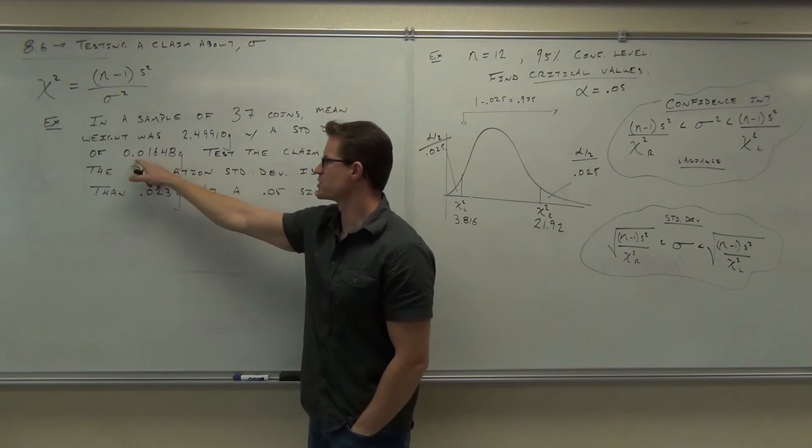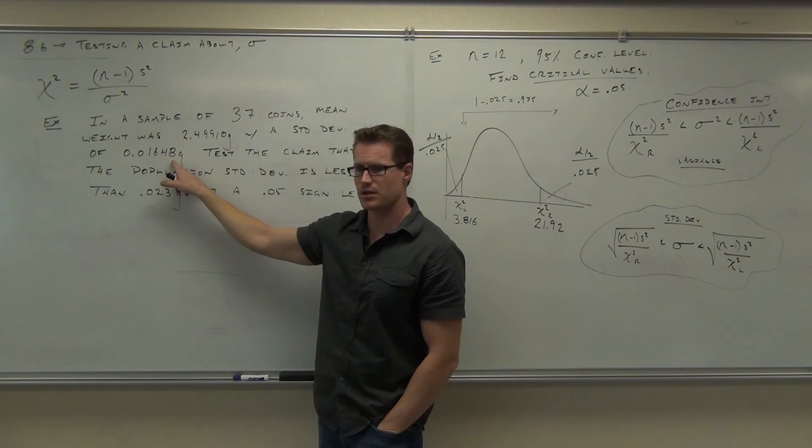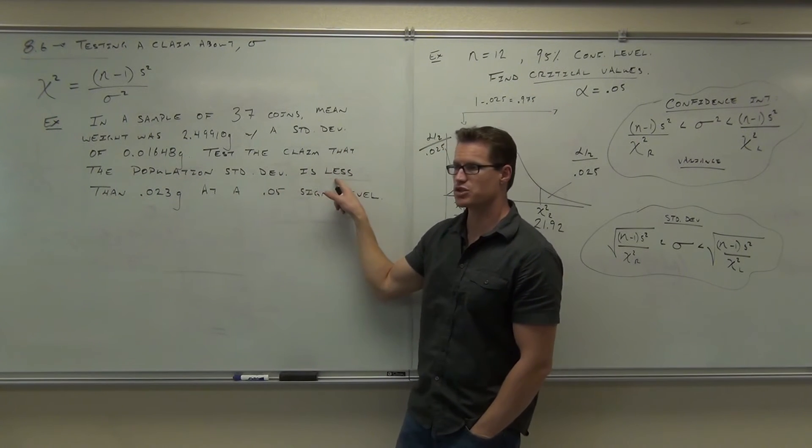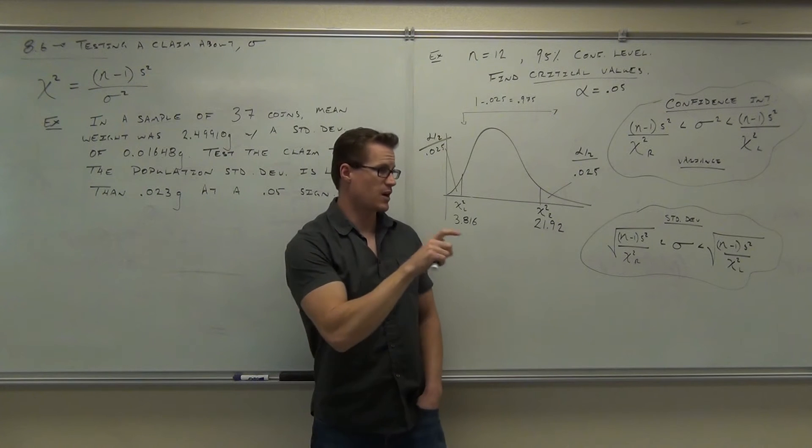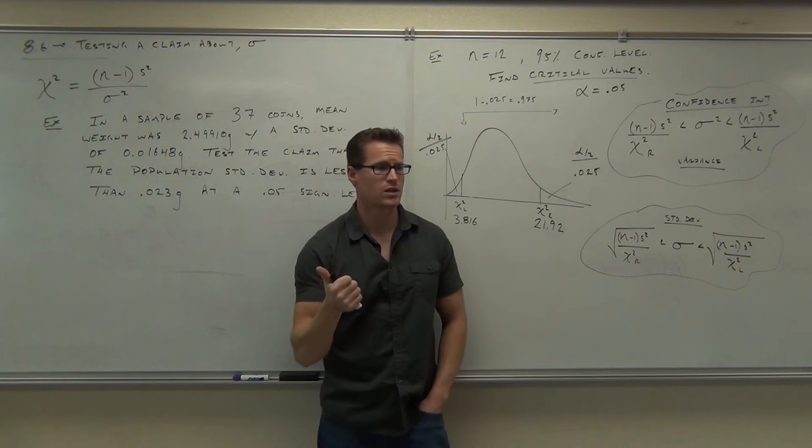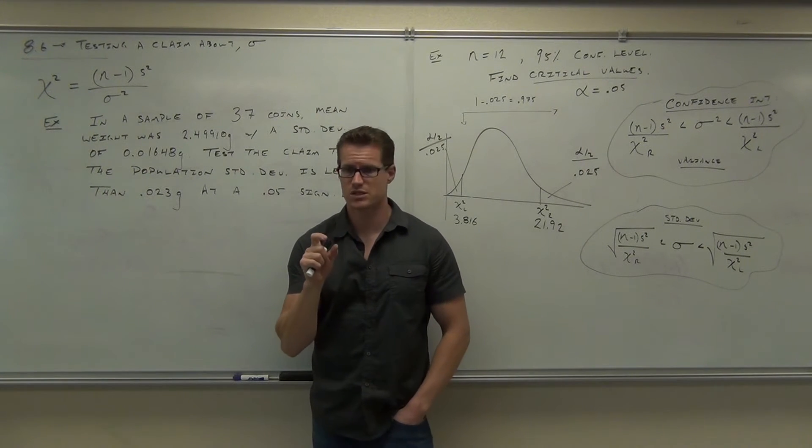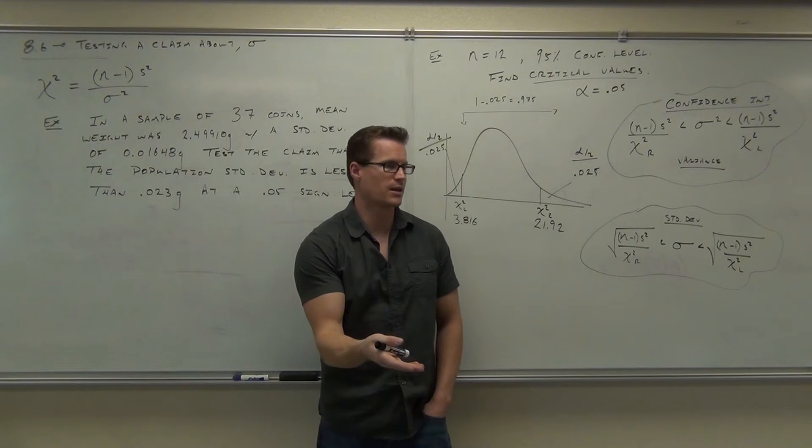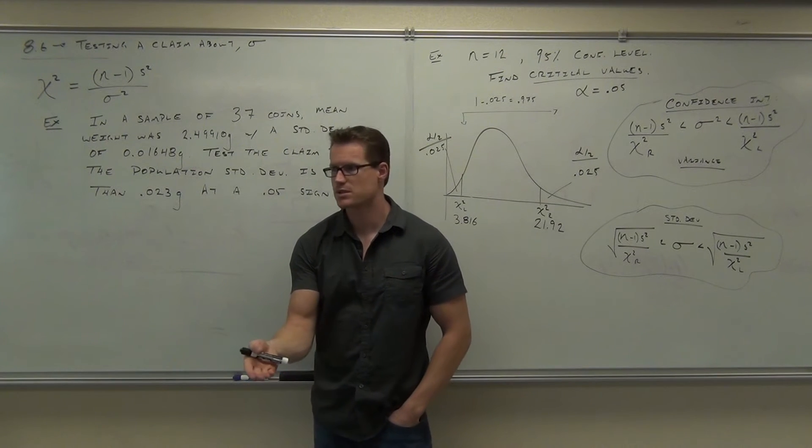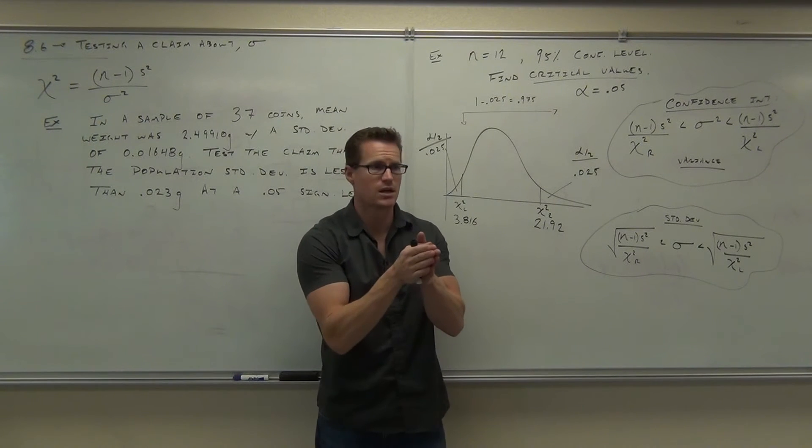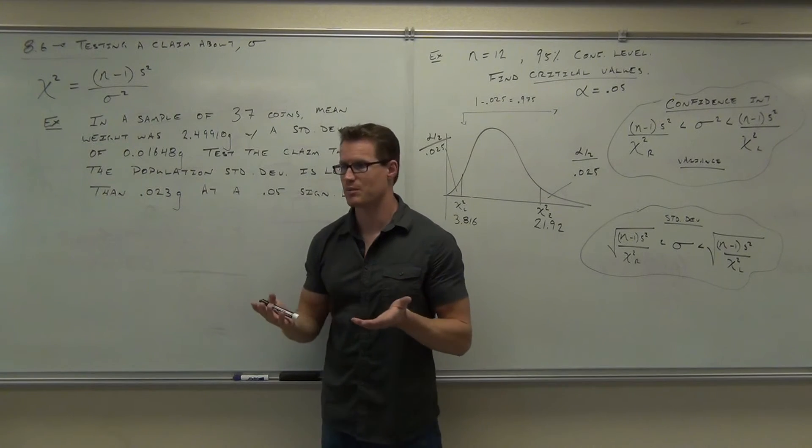By the way, it says with a standard deviation. What type of standard deviation is this? Is this a population standard deviation or a sample standard deviation? A sample. Clearly a sample. If we had the population deviation, we wouldn't have to do this problem. We would know it. We're trying to test a claim about the population standard deviation. In fact, we want to find out 95% certainty. Where am I getting 95% certainty from? With 95% sureness that our coins vary less than 0.023 grams. So I can go to the government and say, hey, we're producing coins that don't vary, or vary by less than 0.023 grams. I'm 95% sure of that.